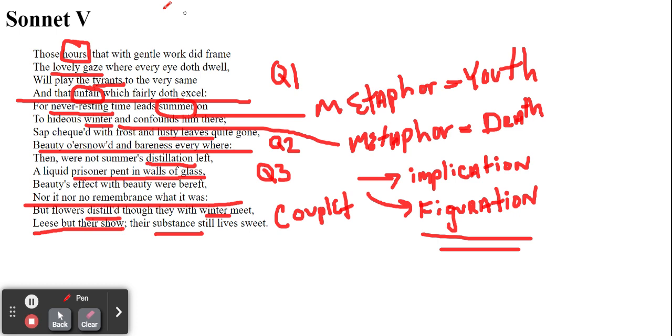So remember, this is sonnet number five, and it's within the procreation series, one through seventeen. So this is just another metaphorical development. Here, Shakespeare is using the metaphor of youth and death, summer and winter, and then he's using this distillation process.